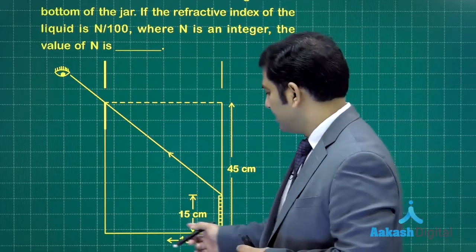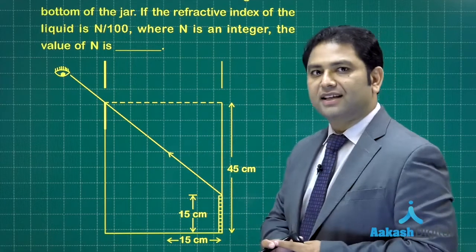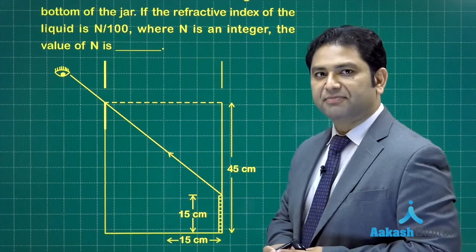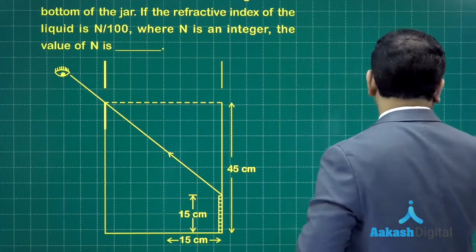The diameter of the cylindrical beaker is 30 centimeters, radius is 15 centimeters. Now what does the question say, let's see.